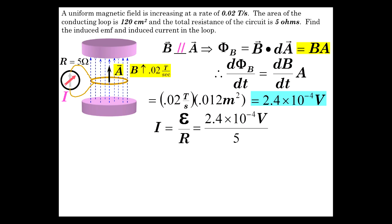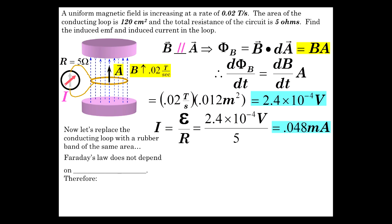Now the current is just EMF over R. So divide that number by 5, and you get 0.048 milliamps. Very small induced current from the induced EMF.